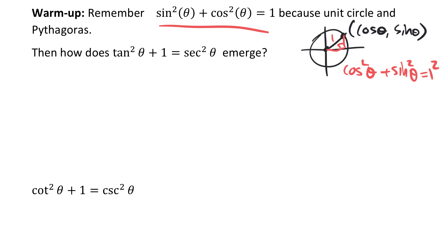But we used two other formulas. If you remember, tan squared theta plus 1 is secant squared theta, and cotan squared plus 1 is cosecant squared theta. Now, neither one of these jump off the unit circle, so to speak. But we can actually come up with these pretty easily — they're not random formulas, they have an explanation that we could provide for them.